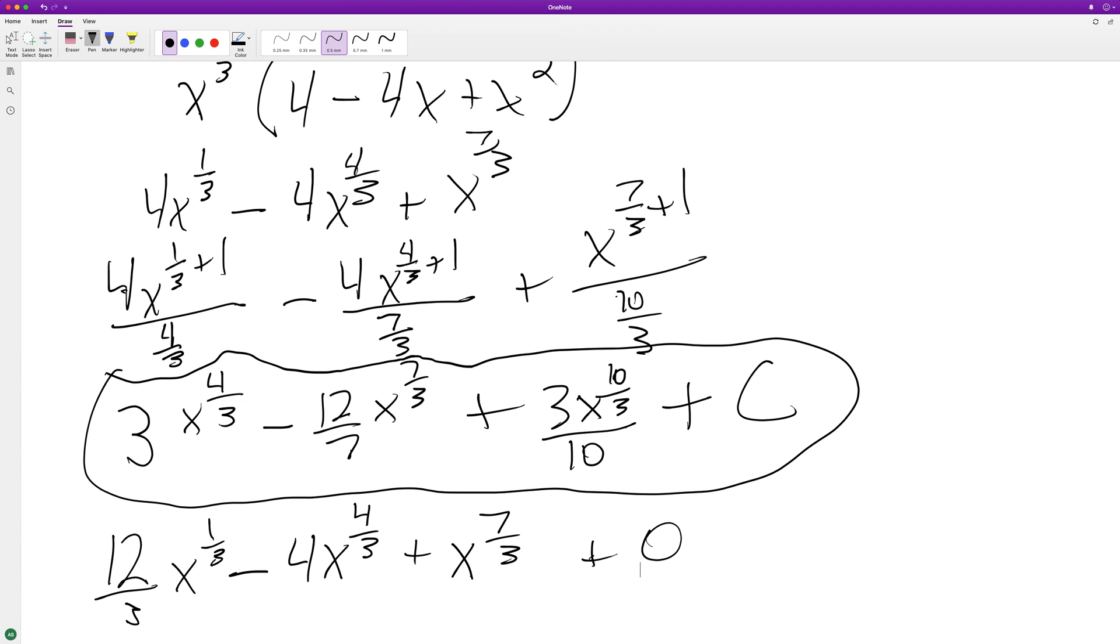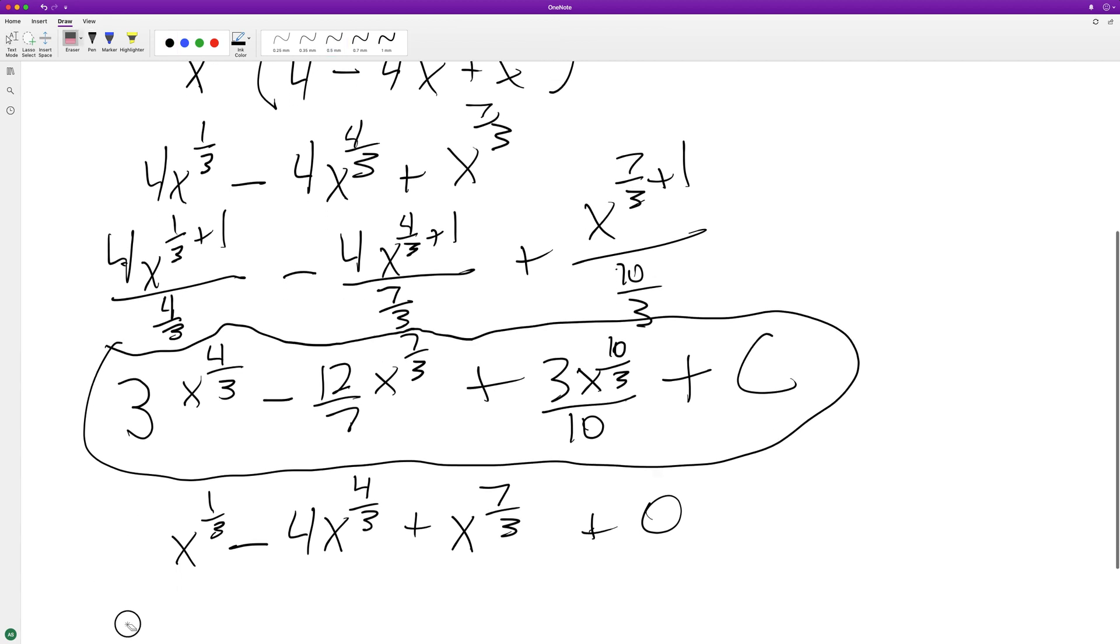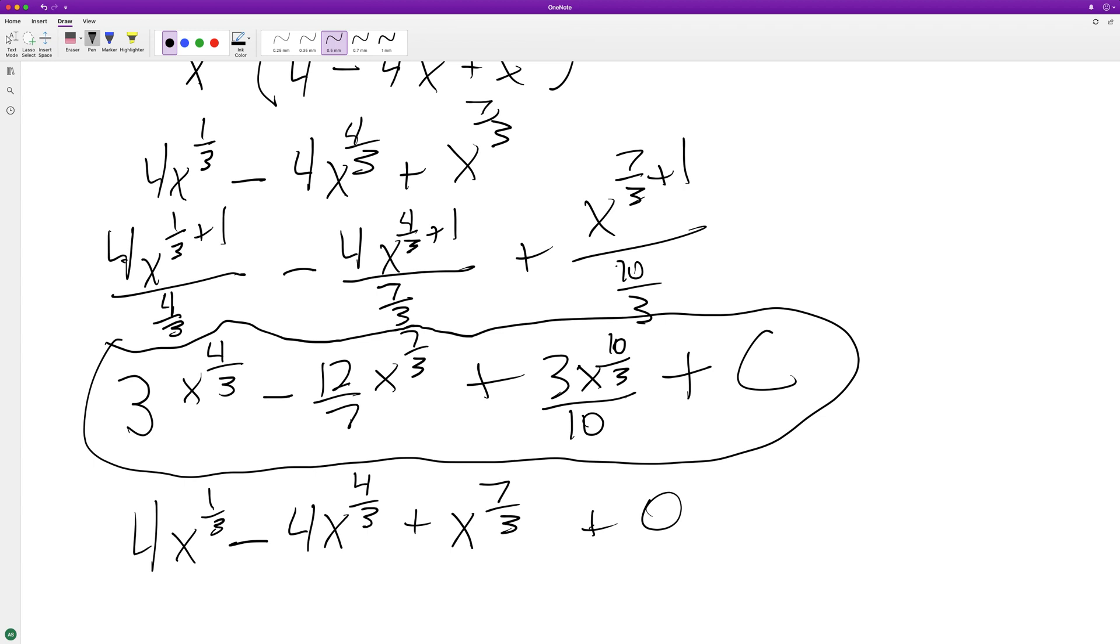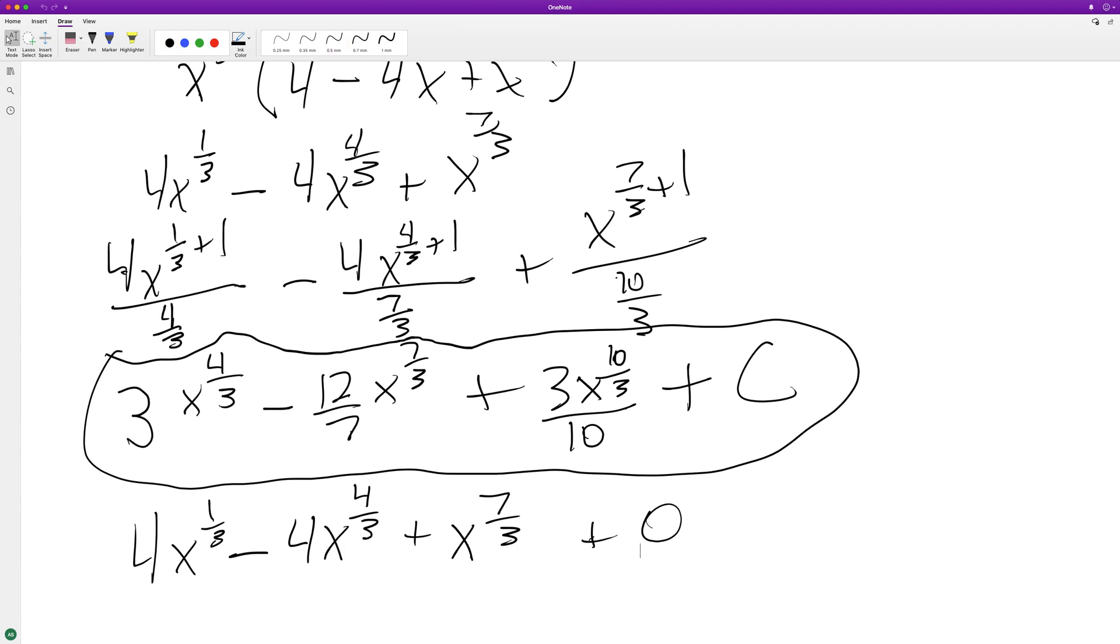And then what happened is, and this should be four. What happened is you factor out x raised to the one third, and then you're able to factor it back to what it was, and that's your proof.